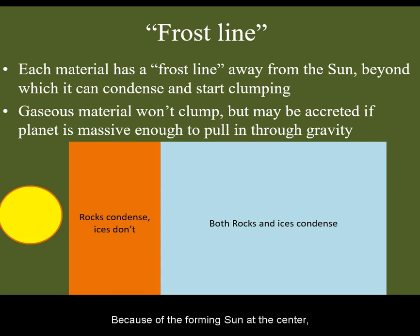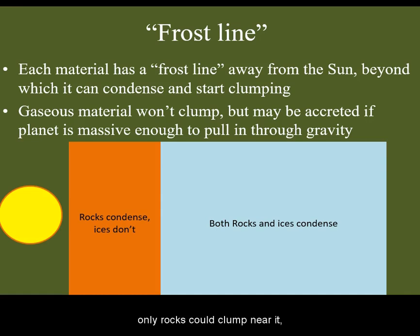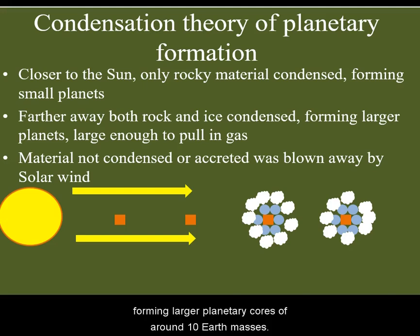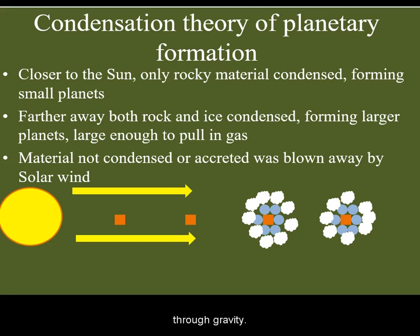Because of the forming Sun at the center, only rocks could clump near it, forming small, rocky, terrestrial planets. Farther away, both rocks and ices could condense, forming larger planetary cores of around 10 Earth masses. This was enough to draw in the hydrogen and helium gas through gravity.